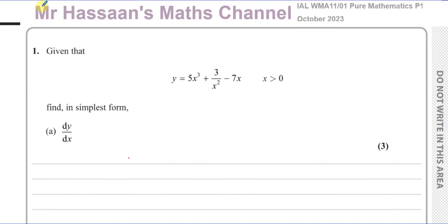So starting with question number one straight away, it says: Given that y equals 5x cubed plus 3 over x squared minus 7x, where x is greater than 0, find in simplest form dy/dx. So part a, find dy/dx. That's simply just differentiating this expression. Before we differentiate, we're going to prepare it for differentiation.